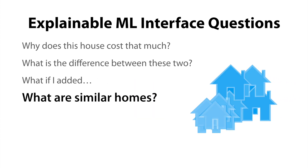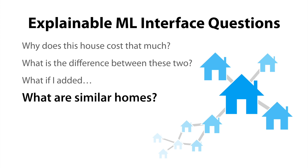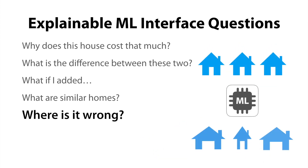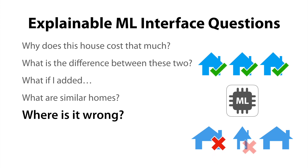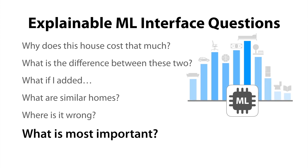We could also ask, what are similar houses to the one I'm looking at right now? Or, what sort of houses does it usually get right and which ones does it usually get wrong? And lastly, what feature does the model think is most important for making a prediction?